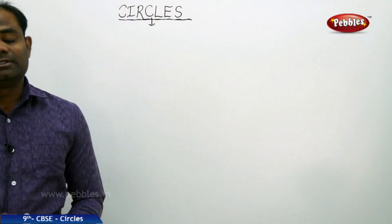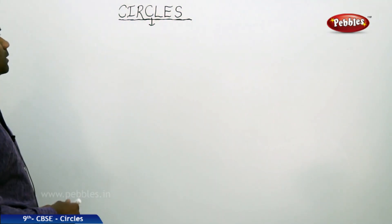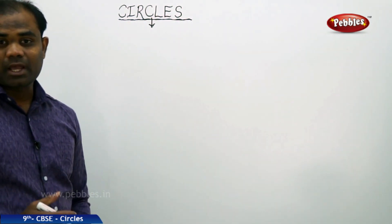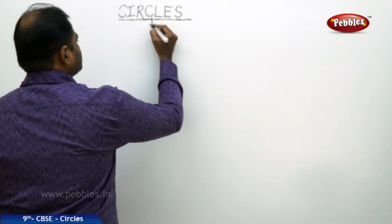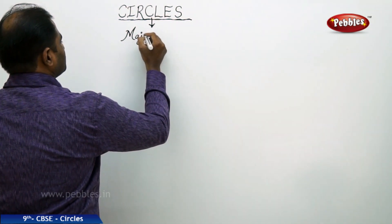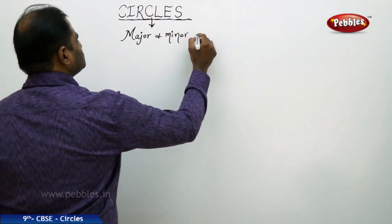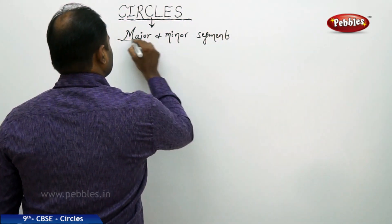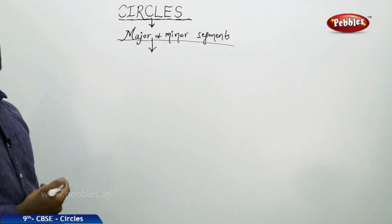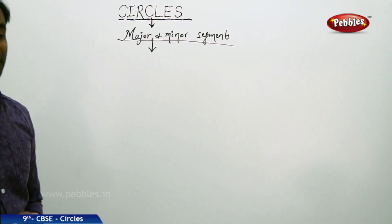Now that we have defined the segment and explored the possible number of segments for a circle, the question is: what are those two segments called, and how do we define each region? Today's session is about major segment and minor segment. Let's see the basic definitions of major and minor segments.